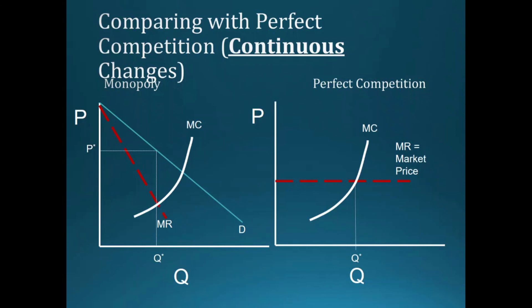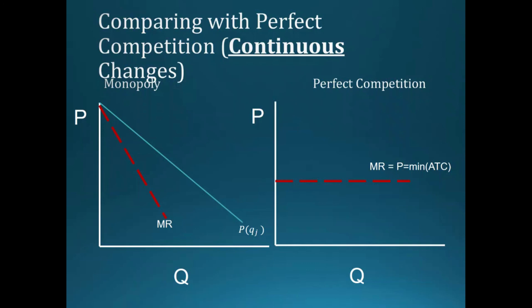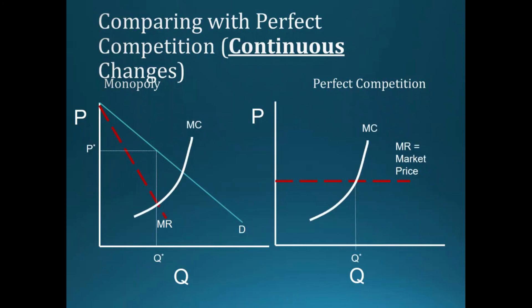The monopoly firm sets the quantity where marginal revenue equals marginal cost and charges a price equal to the height of the inverse demand curve at that quantity. On the right-hand side under perfect competition, marginal revenue for any single firm is simply equal to the market price — no matter how many units they sell, they cannot impact it. So when they sell an additional unit, they don't have to lower the price on units already being sold. Firms in perfect competition also set marginal revenue equal to marginal cost; it just happens that marginal revenue and price are the same. The structure of the market prevents them from earning profits, even though they are maximizing profits given that structure.